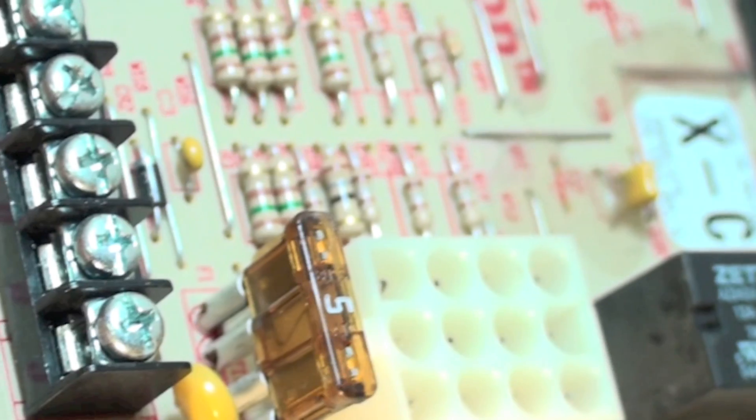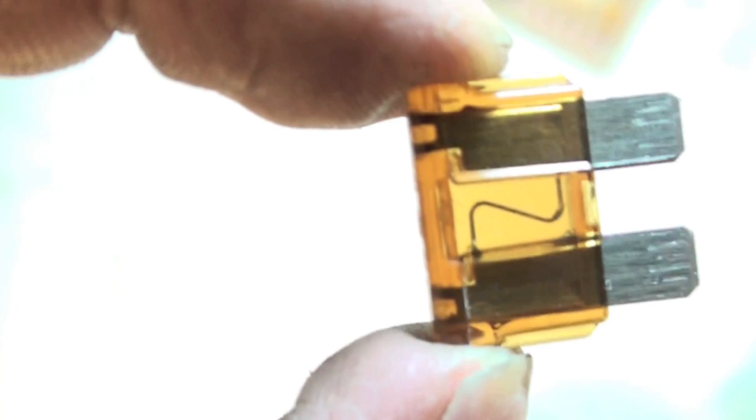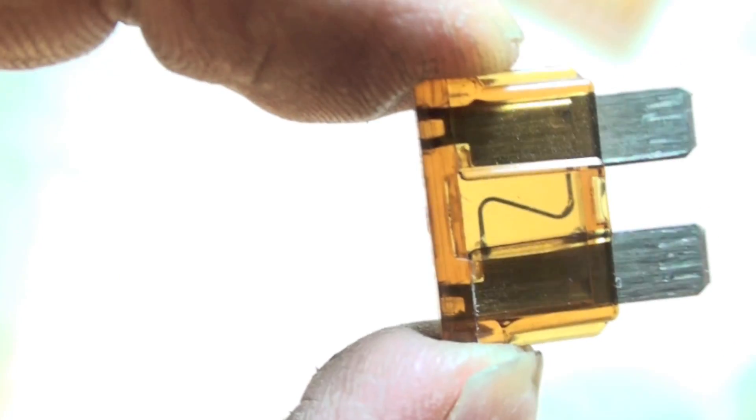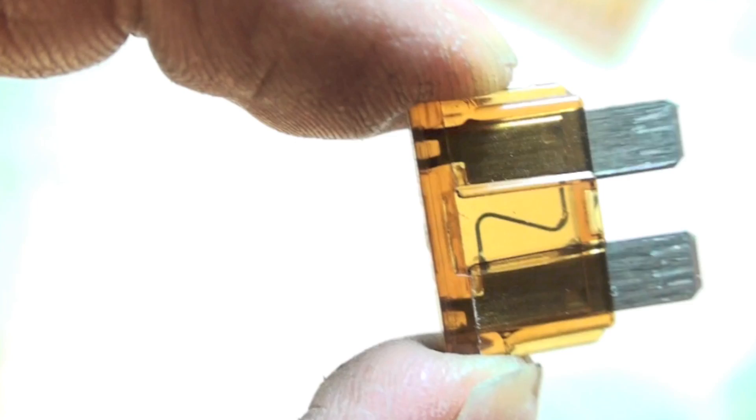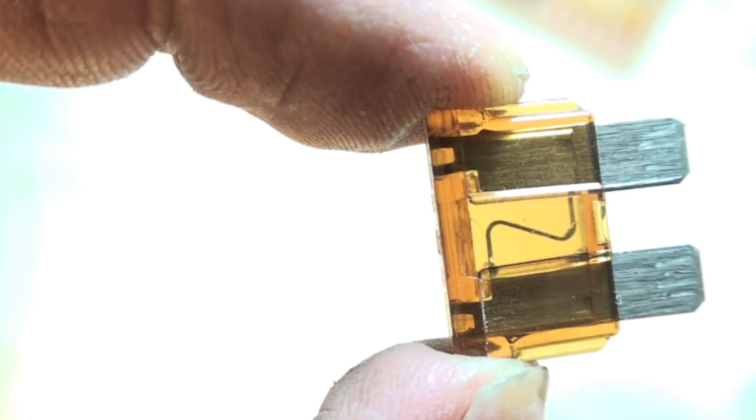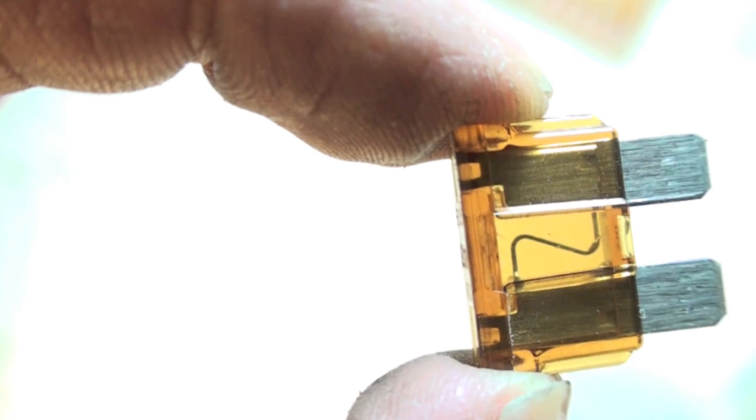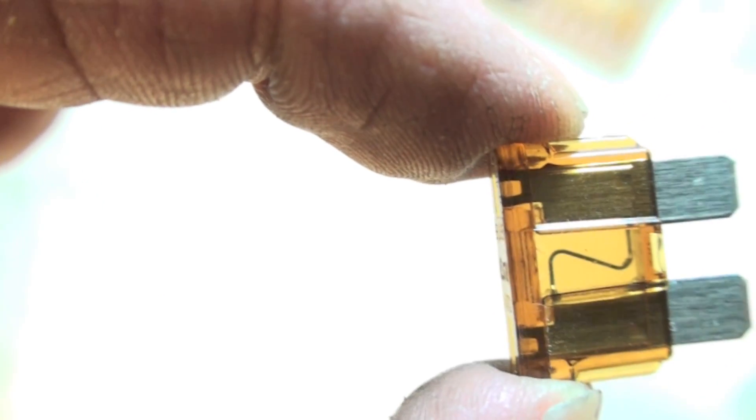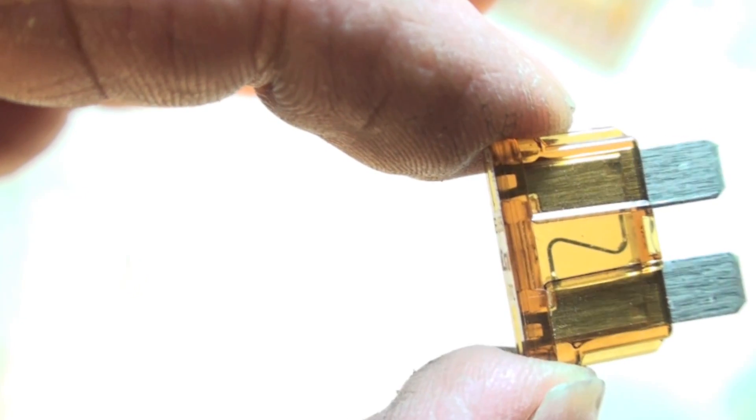That one is a 5 amp, and I'm going to pull it out. We'll get a little closer. Now you can see there, that's the element inside. If you see little sparky things where it's burned, that means it's blown. You can also check it with an ohm meter.